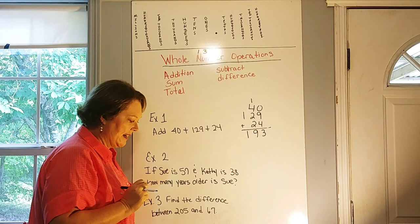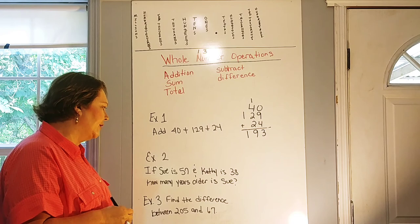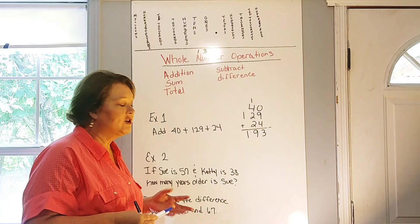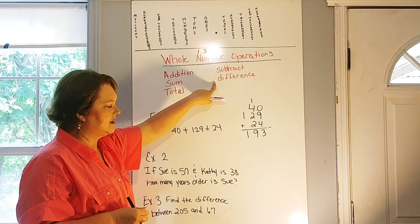Okay, let's look at our example two. If Sue is 57 and Kathy is 38, how many years older is Sue? Well, do you think we should add or subtract those numbers? Well, if we add them together, that's not going to tell us anything but their combined age. So they're asking us how many years older is Sue. That means that we need to subtract. We need to find out the difference between their ages.